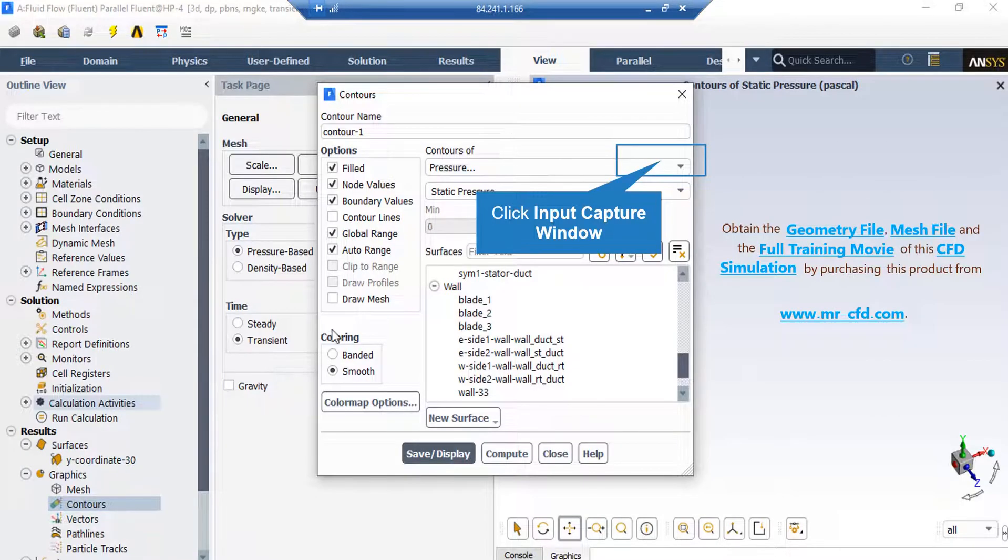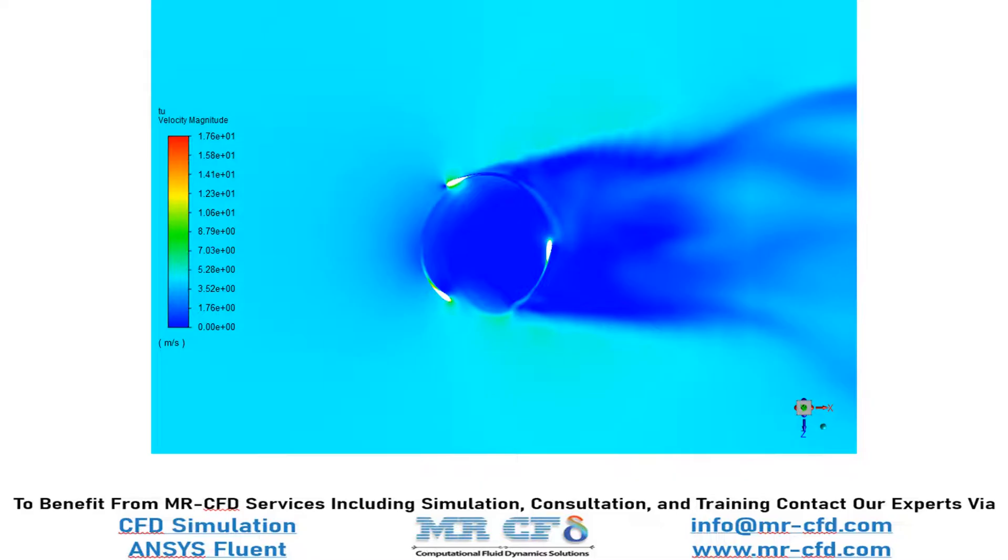In the appeared window under the contours of section, we select velocity as our desired variable. Then under the surfaces section, we select our previously defined plane. In this slide, you can easily see the velocity distribution inside our computational domain when the air flow passes over the blades of our turbine.